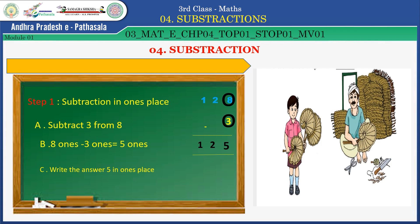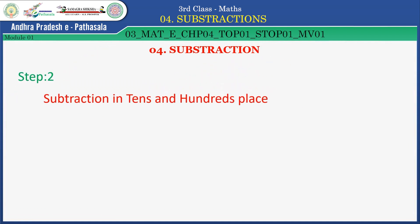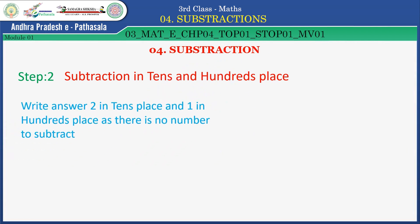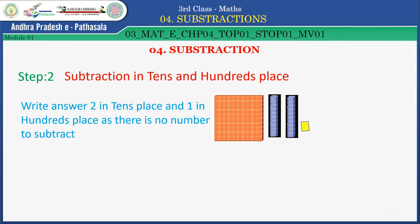Write the answer 5 in ones place. Subtraction in ones place: subtract 3 from 8 — 8 ones minus 3 ones equals 5 ones. Write the answer 5 in ones place. Step two — subtraction in tens and hundreds place. Write answer 2 in tens place and 1 in hundreds place. There is no number to subtract. Now, Dhanaya has 125 hand fans.